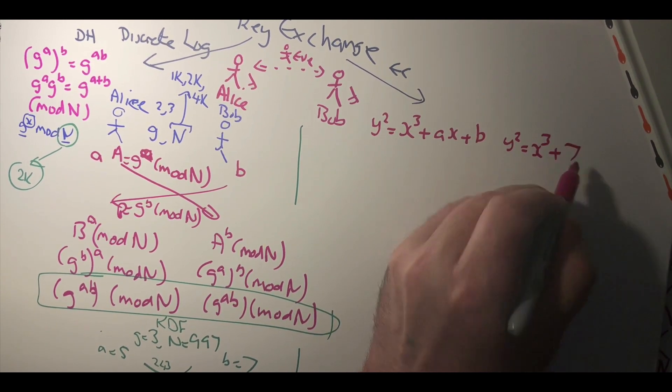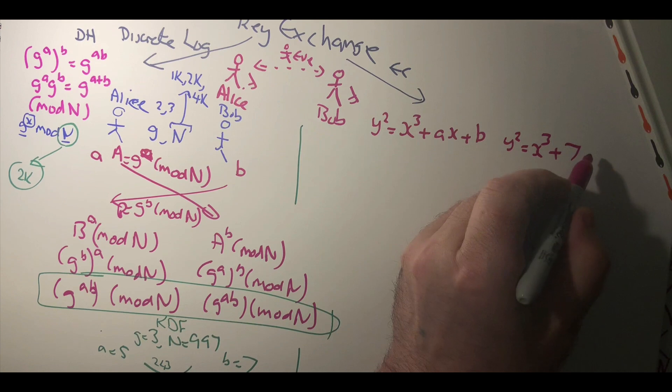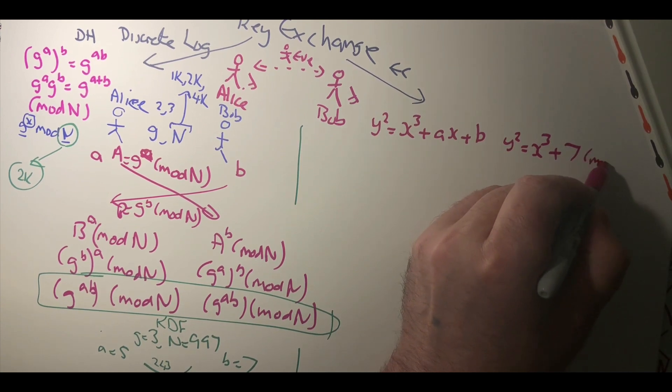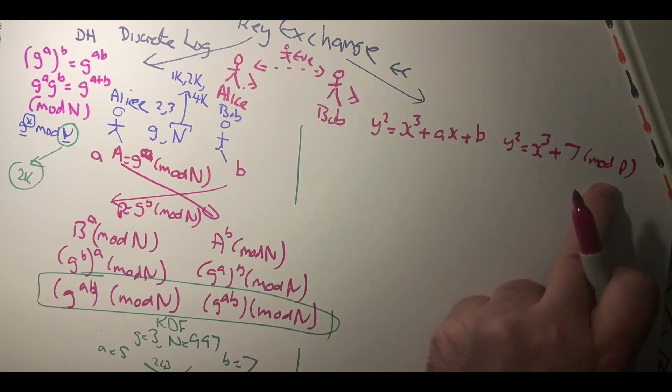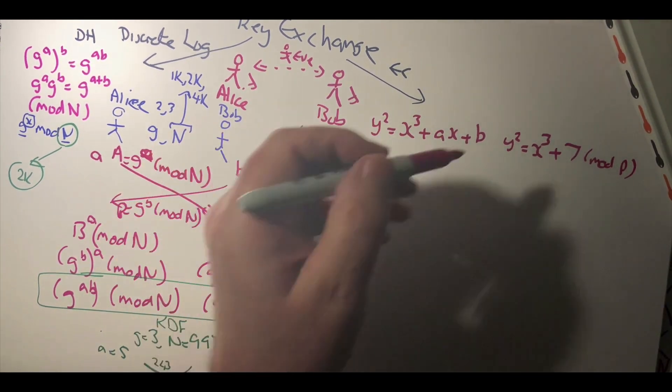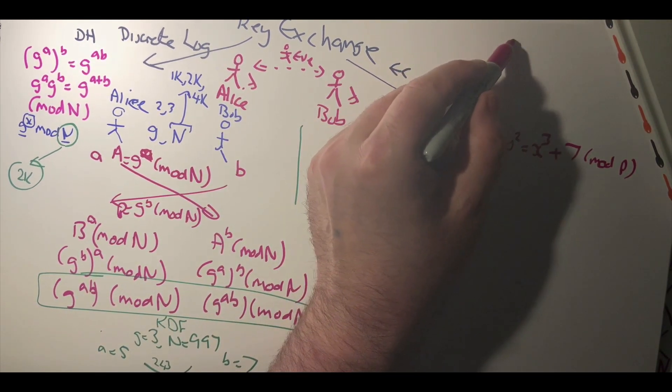And we also have the mod of a prime number. So this creates in its analog form an elliptic curve.